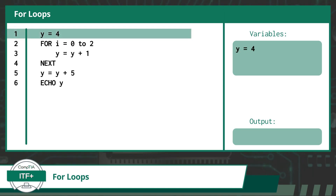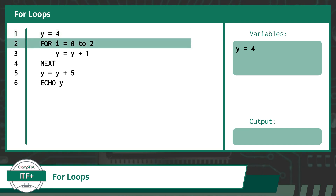First, we will declare a variable with the identifier y and initialize it with the value of 4. On line 2, we see a for loop statement. The for loop statement starts with the word "for," followed by the declaration of a counter variable. For this example, our counter variable will be i. This variable is appropriately named as it will help us keep count of which iteration of the loop we are on. We know that we will continue this for loop from the time our counter variable i starts at 0 and continue until our counter variable i reaches 2.